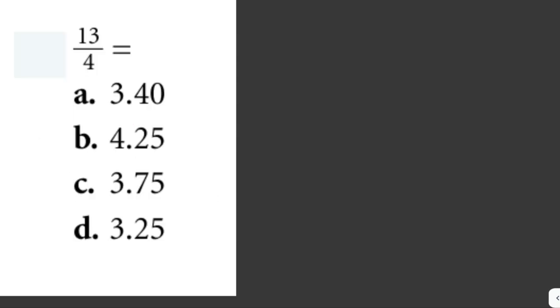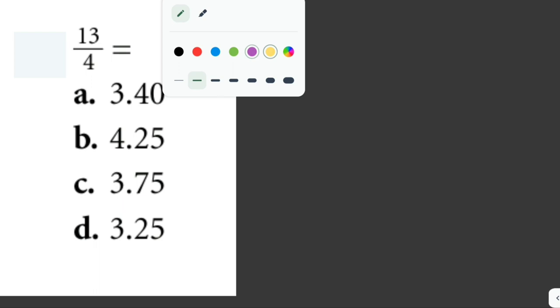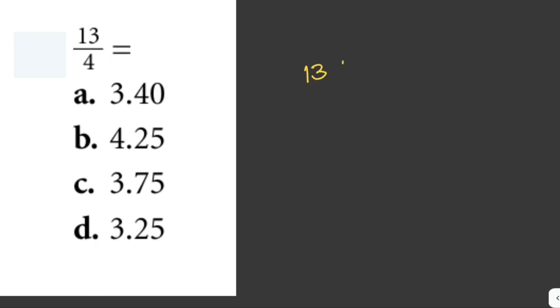13 over 4 is equivalent to... okay, we're given here four choices, and all the choices here are in their decimal form. So all we have to do is we divide 13 by 4. So this is just equal to 3.25. You can even use the long division: 13 divided by 4.